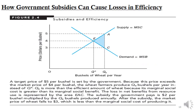We now turn to another economic factor that may cause losses in efficiency: subsidies. Subsidies can cause losses in efficiency. Let's examine the effects of agricultural subsidies on agricultural markets. Suppose the government guarantees farmers a certain price for their crops. When the market price falls below the target price guaranteed by the government, the government pays eligible farmers a subsidy equal to the difference between the market price and the target price. We can see the impact through Figure 2.4.